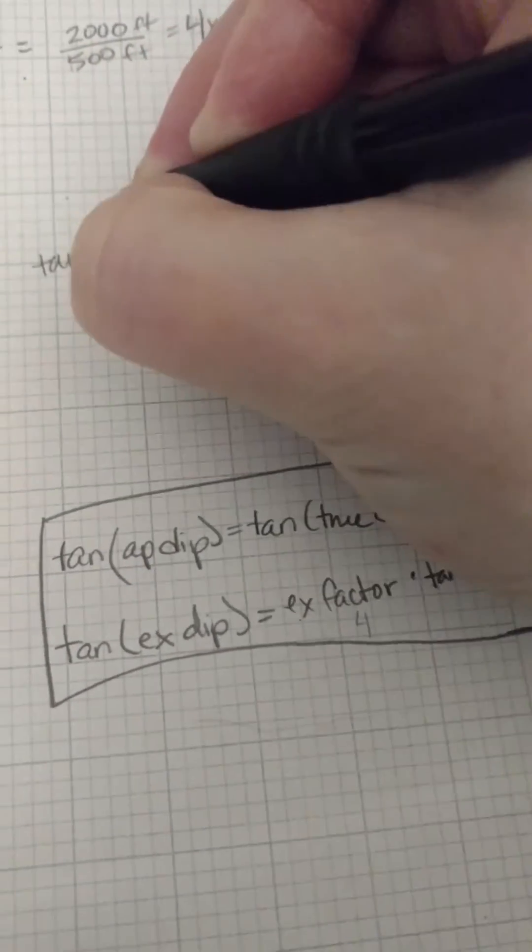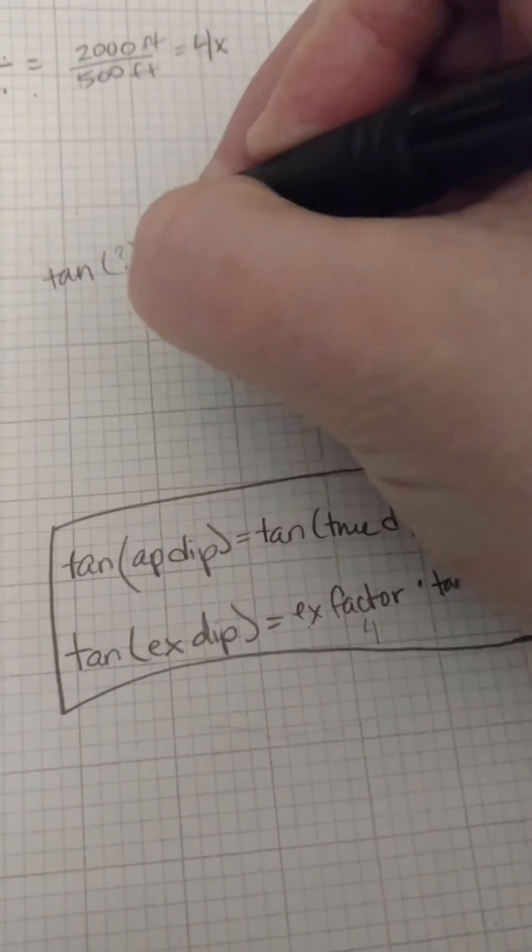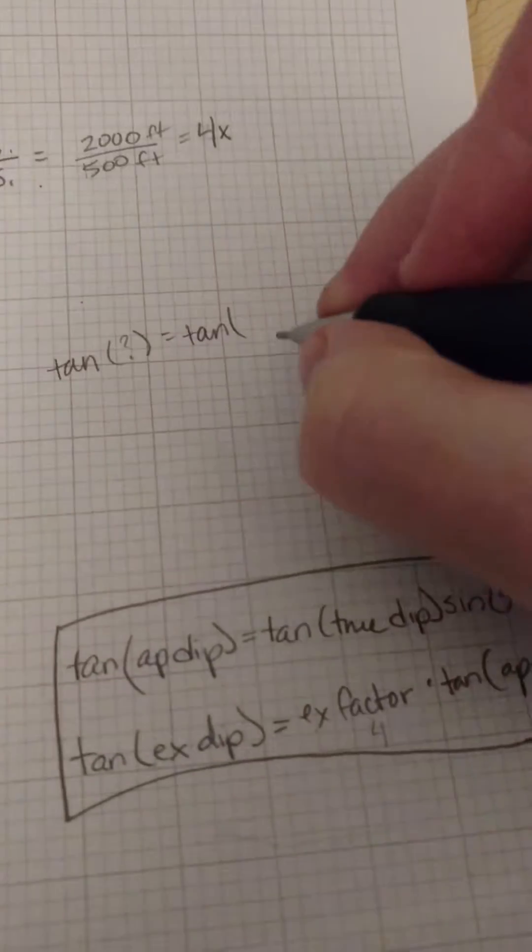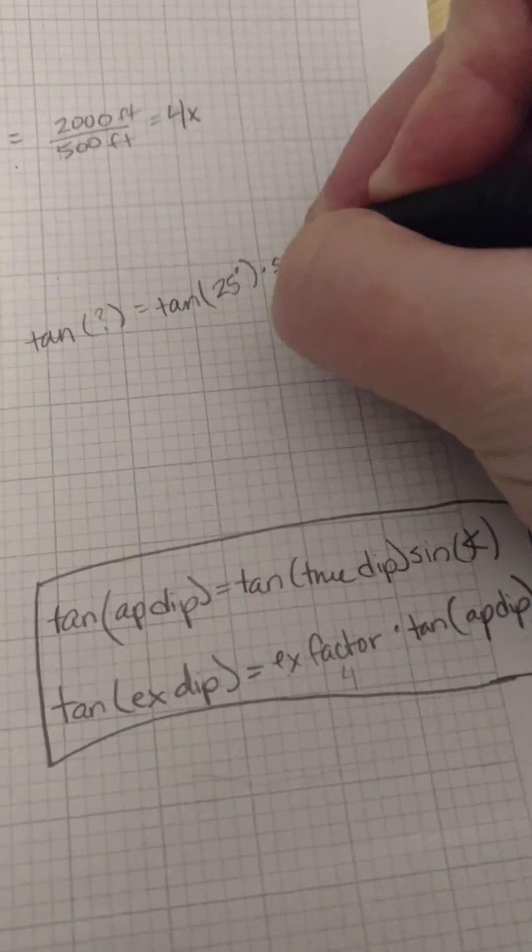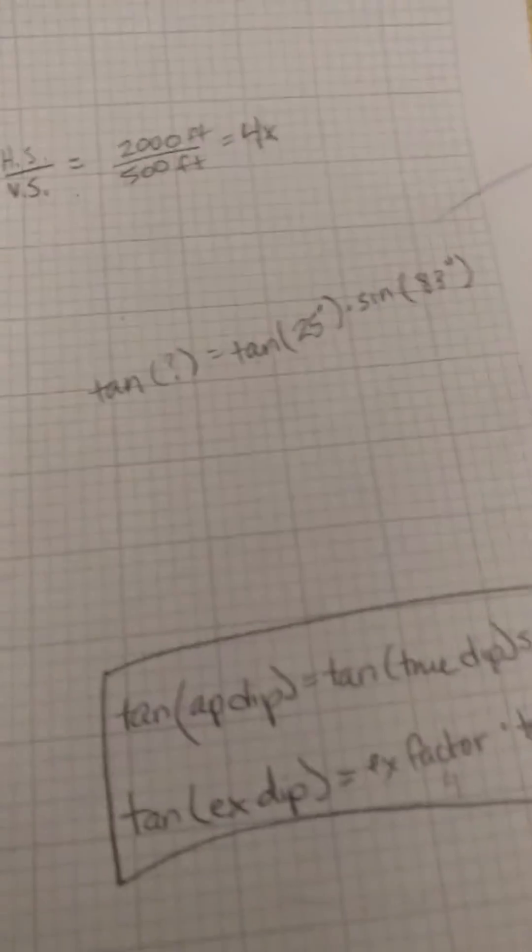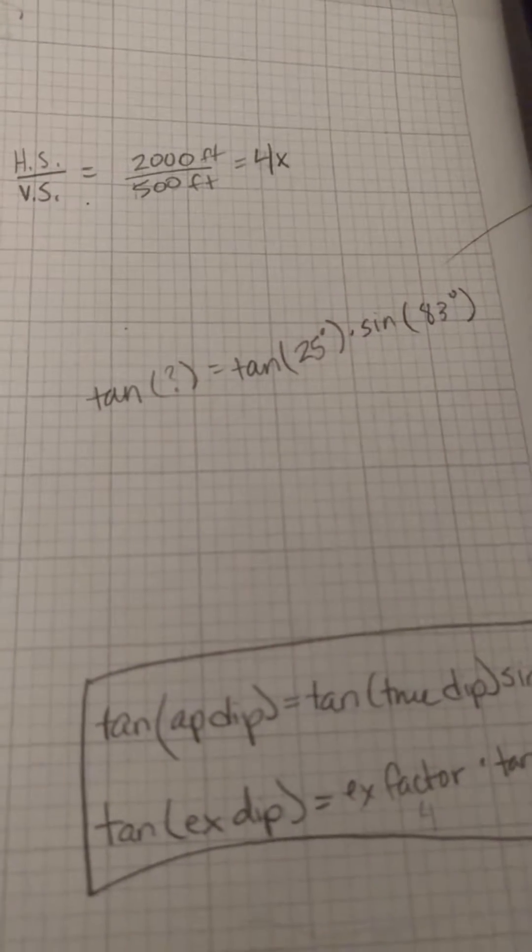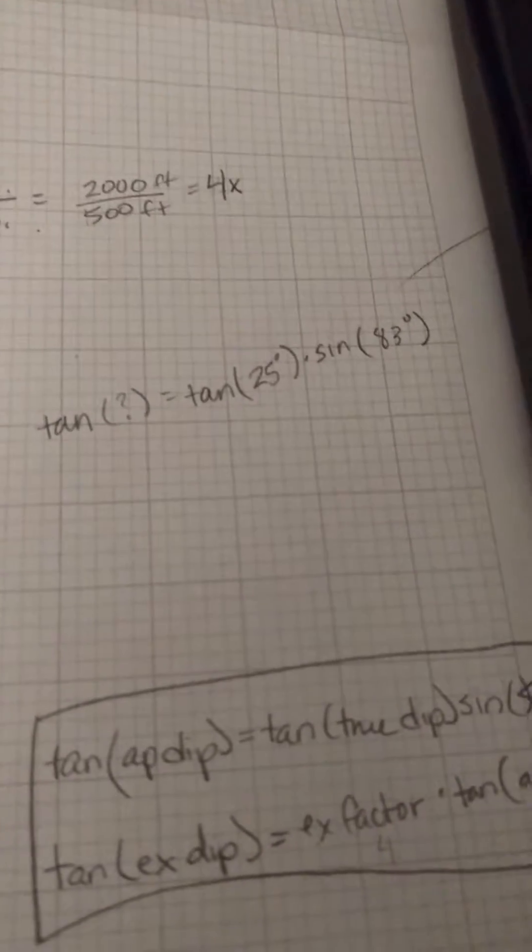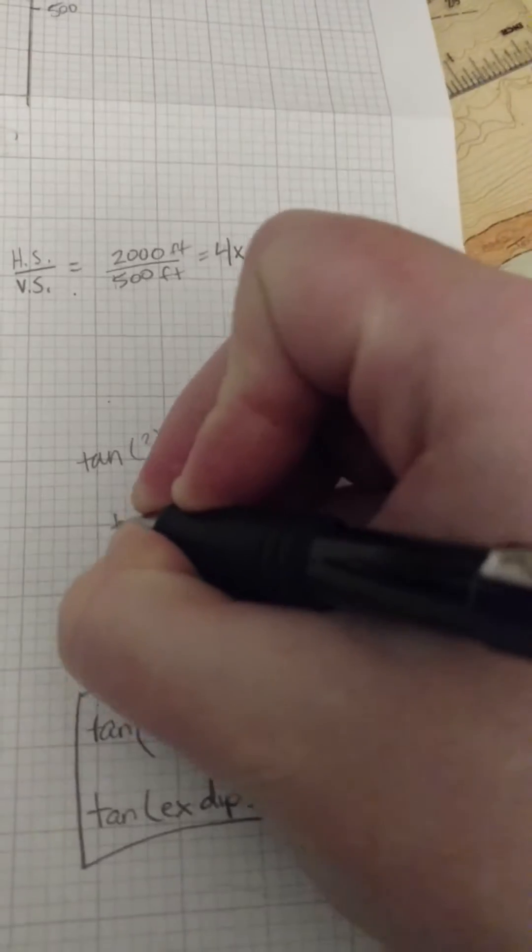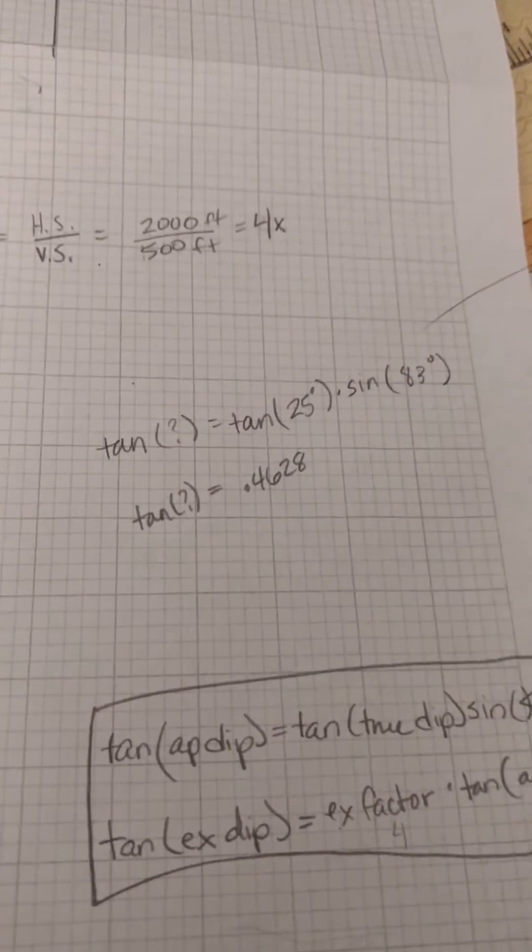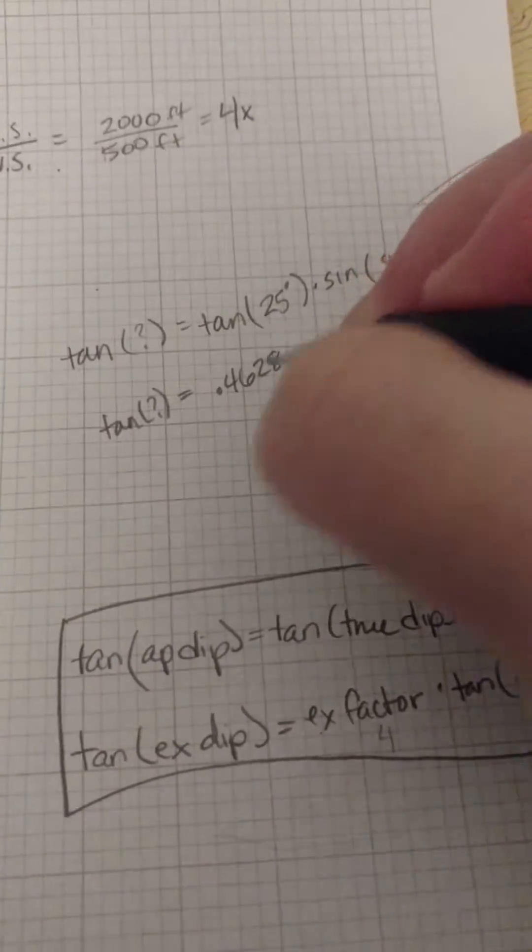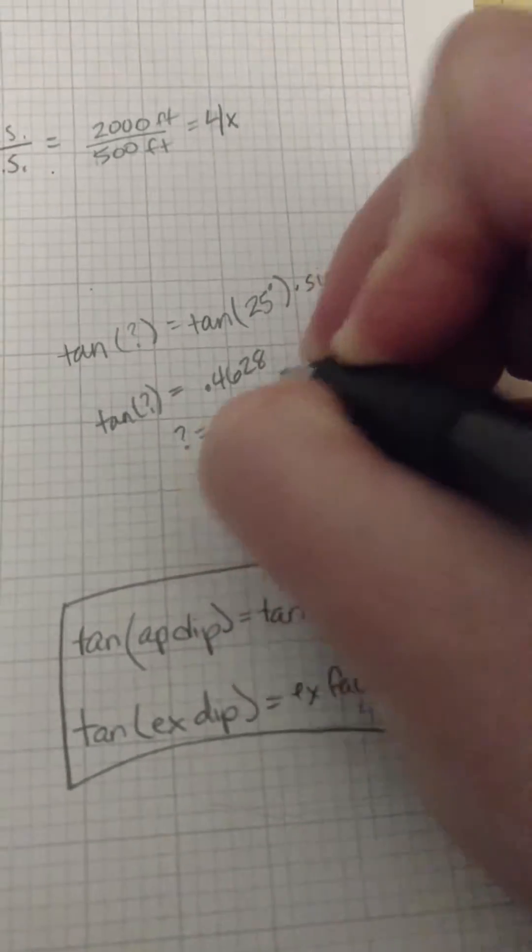So I'm going to do tangent of the apparent dip is what I want, so I don't know what that is, but I'm looking for it, is the tangent of the true dip. The true dip was, let's just do the one with 83 degrees. It's 25 degrees times sine of the angle that we had measured, so that was 83 degrees. Okay, so I'm just going to grab my calculator. So tangent of 25 times sine of 83 is 0.4628. And I'm going to take the inverse tangent of that number to figure out what it is. And I'm going to get 24, so that angle we're looking for is 24.83. That's our apparent dip.